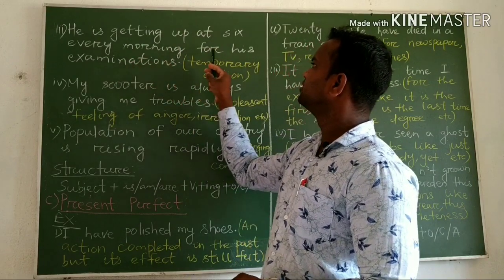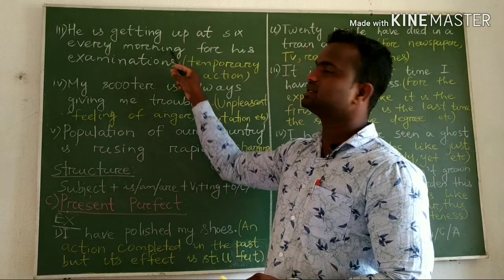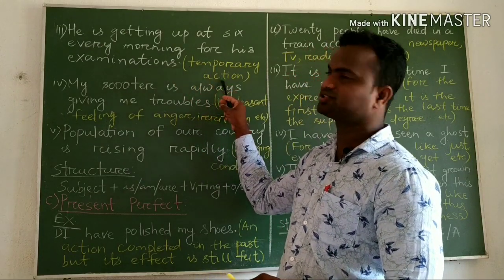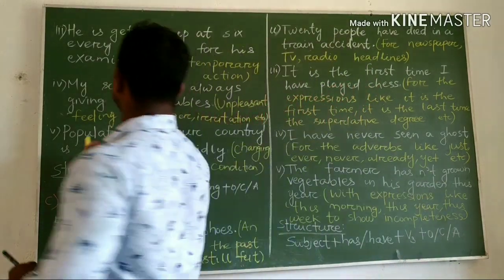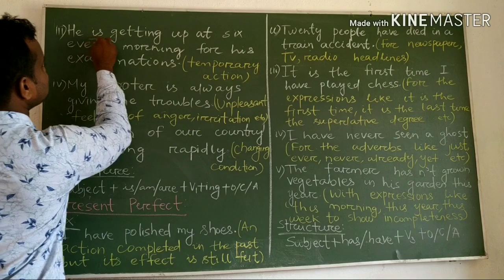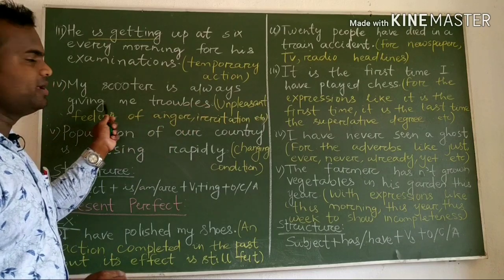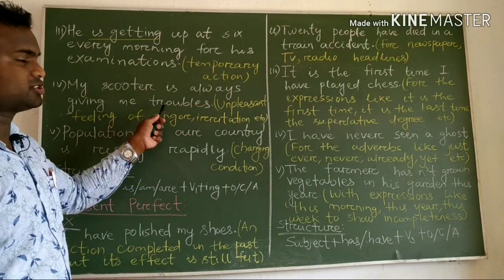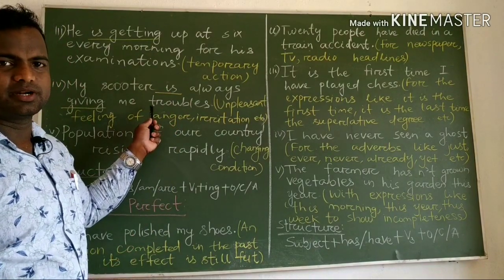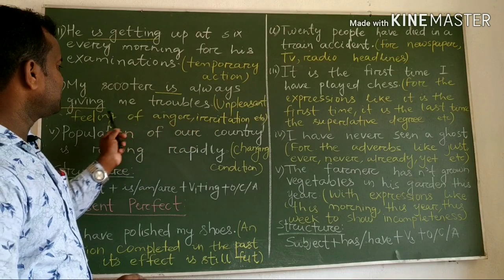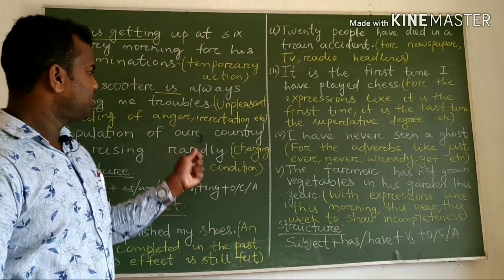Another example: He is getting up at six this morning for his examination. This sentence expresses a temporary action. Next example: My scooter is always giving me trouble — this expresses an unpleasant feeling of anger or irritation using present progressive with 'always'.